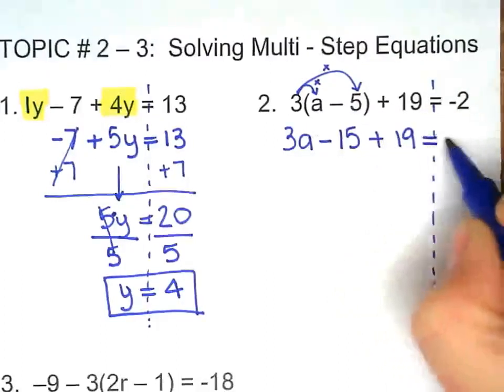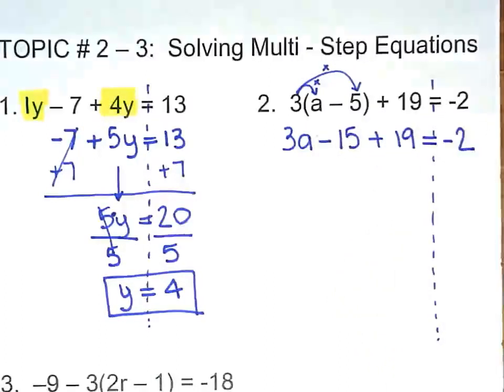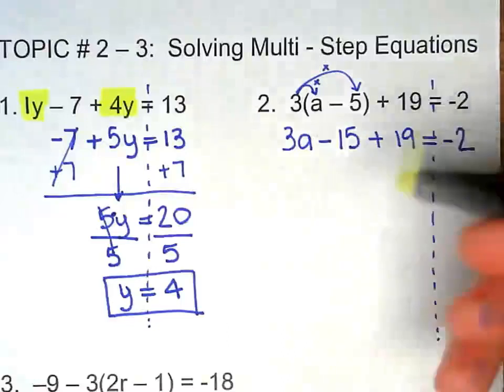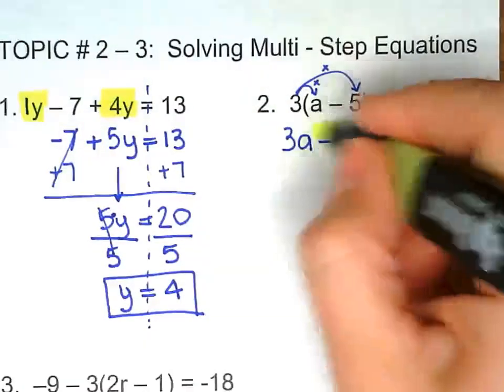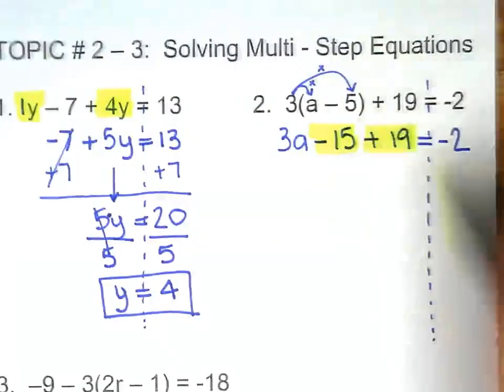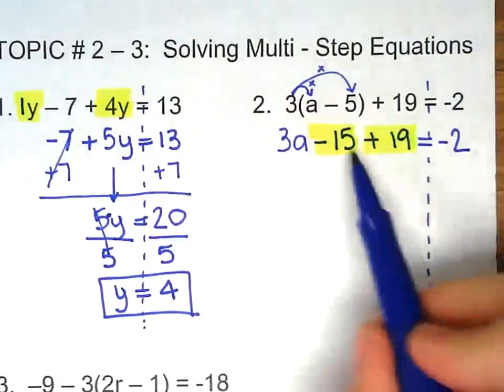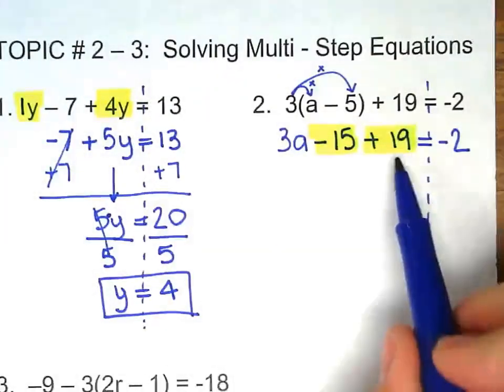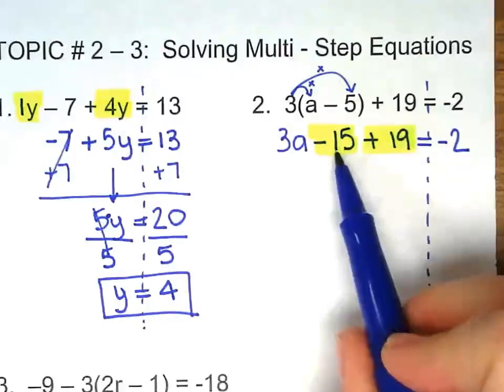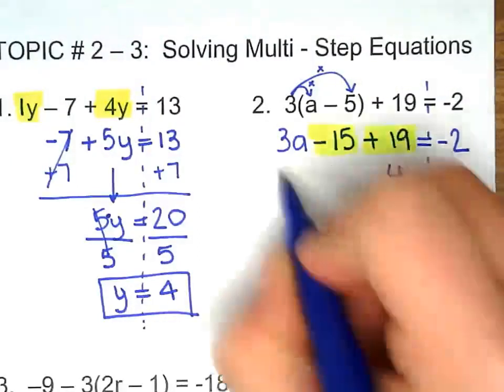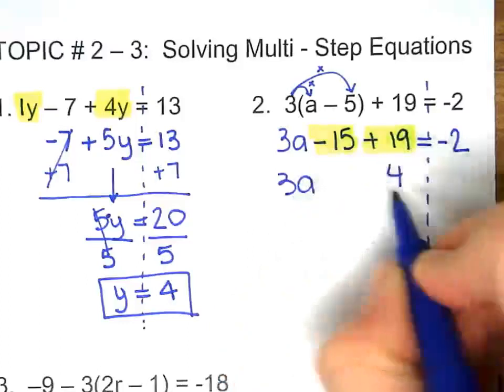Plus 19 equals negative 2. Now we're combining whatever is on the same side. So negative 15 and 19. So you can type this in, or 19 take away 15 is 4. And then bring everything else down.